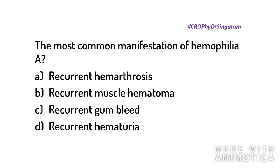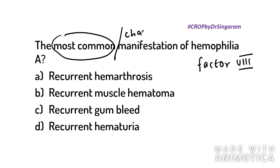The most common and characteristic manifestation of hemophilia A is recurrent hemarthrosis — bleeding into joints. Hemophilia A is due to factor 8 deficiency; hemophilia B is due to factor 9 deficiency. Hemophilia A is more common. Being a coagulation factor defect, it causes deep bleeding. The lower limb joints — knee and ankle — are most commonly affected.